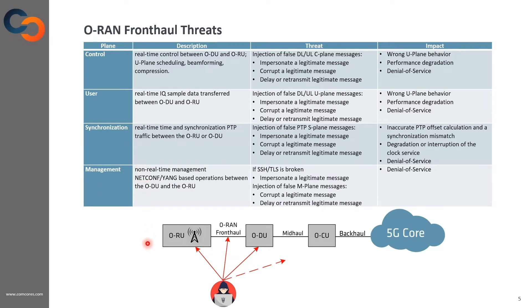Therefore, there is an urgent need for security mechanisms at layer 2 to protect the ORAN fronthaul. The required features are: authenticity, to ensure that only legitimate radio units and distributed units are communicating with each other; confidentiality, so that header information and payload are not visible; integrity, to identify if any message has been corrupted; and replay protection, to ensure in-order delivery of frames.